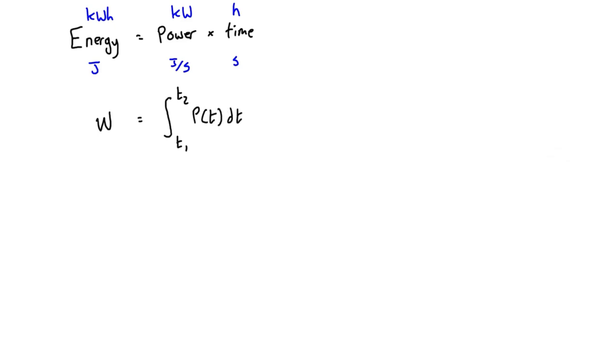Where we actually got this was from the last video where we were talking about power. We had this expression of power being equal to dW dt, which was the rate of energy transfer for power. Just simply reorganizing this, so we have dW is equal to P dt, taking the integral of both sides. And that leaves us with exactly what we have here, just W is equal to that time integral from T1 to T2 of P of T dt.